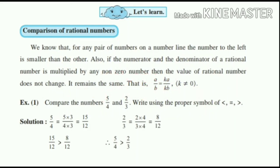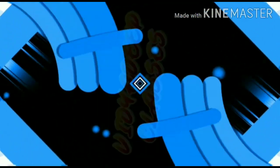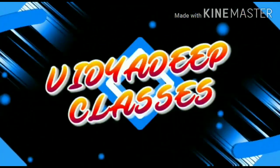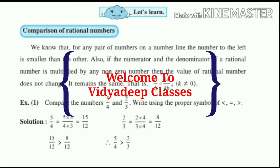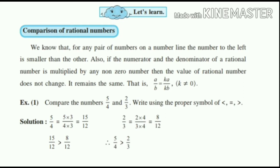Today I am going to teach you comparison of rational numbers. We know that for any pair of numbers on the number line, the number to the left is smaller than the other. Which other? Which is on right hand side.